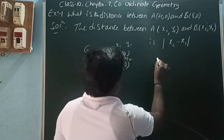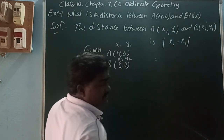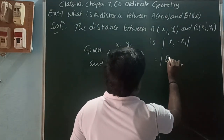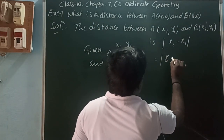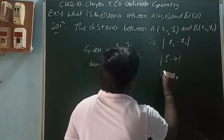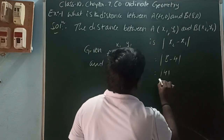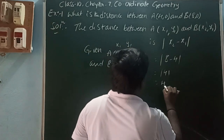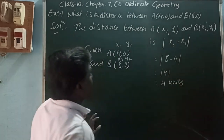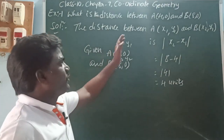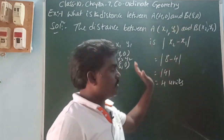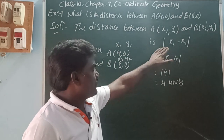The formula is modulus of x2 minus x1, that is modulus of 8 minus 4, which is modulus of 4, equal to 4 units. So the distance between A(4, 0) and B(8, 0) is 4 units.